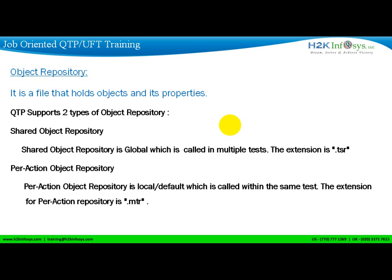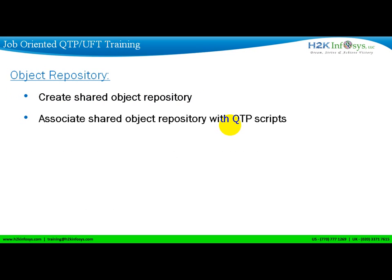There are two types of object repository files: shared object repositories and local object repositories. Shared object repositories are the most widely used because the advantage is reusability — you can use them across multiple scripts, whereas the local object repository is local to the script and you cannot reuse it.